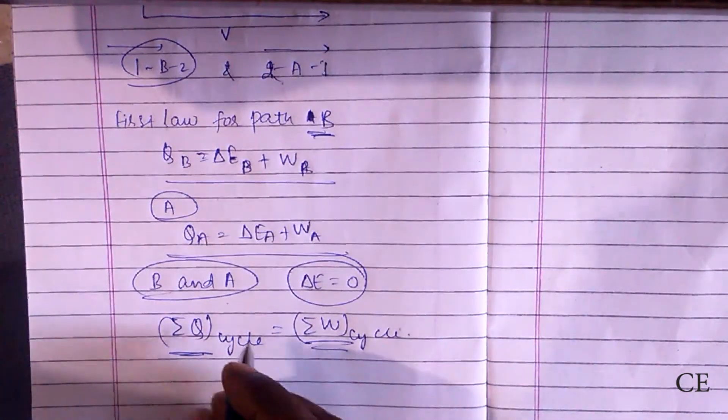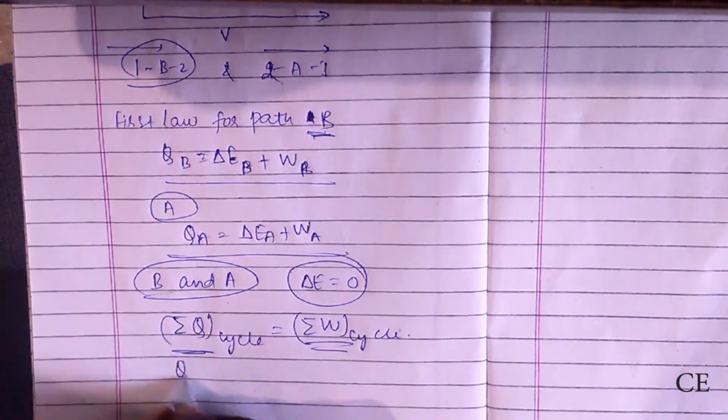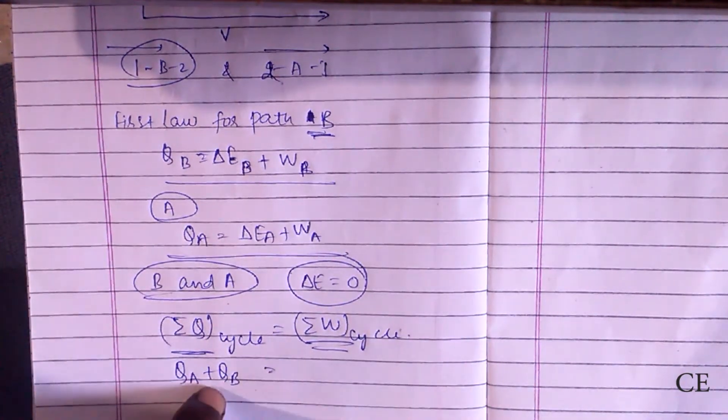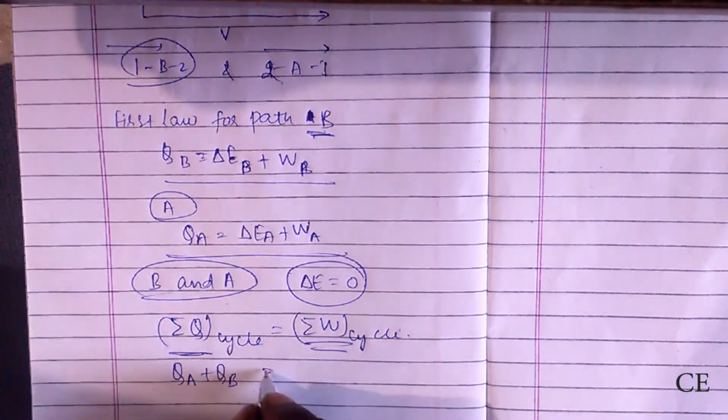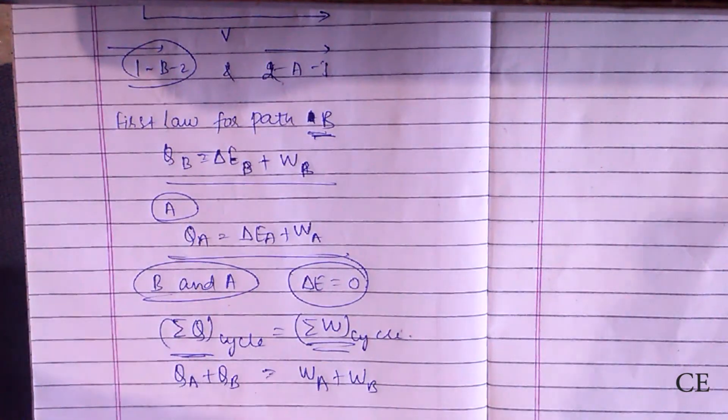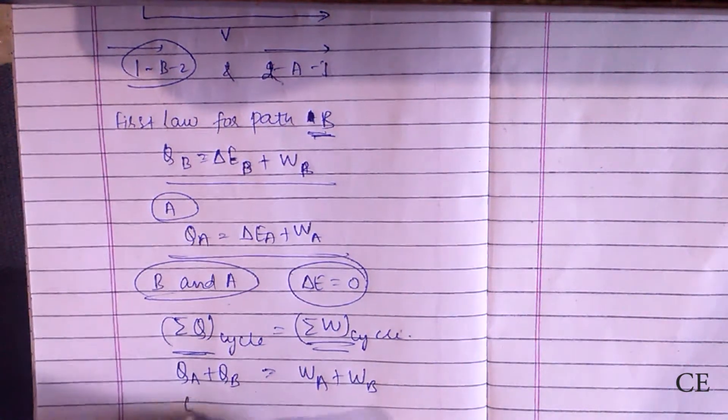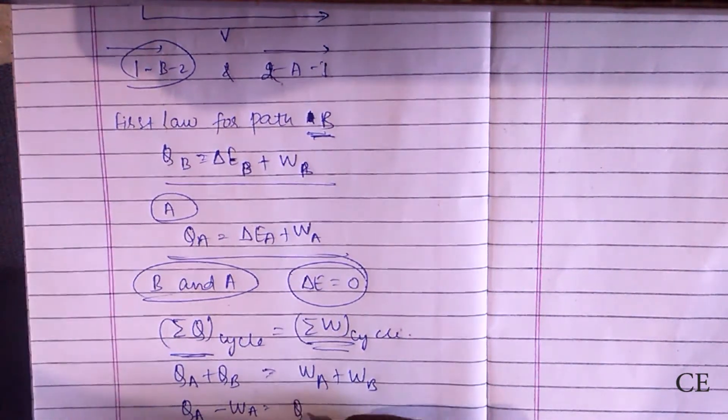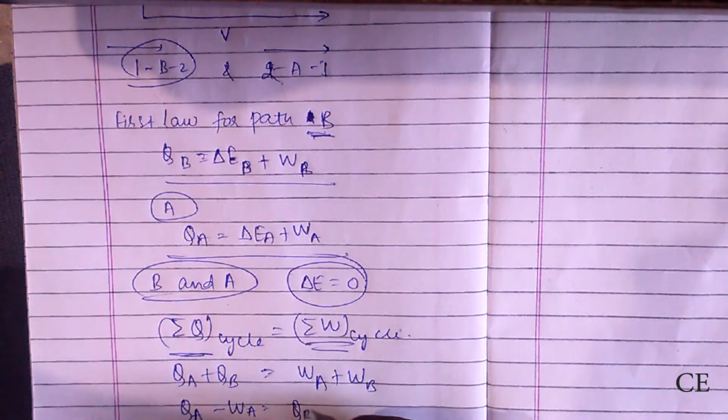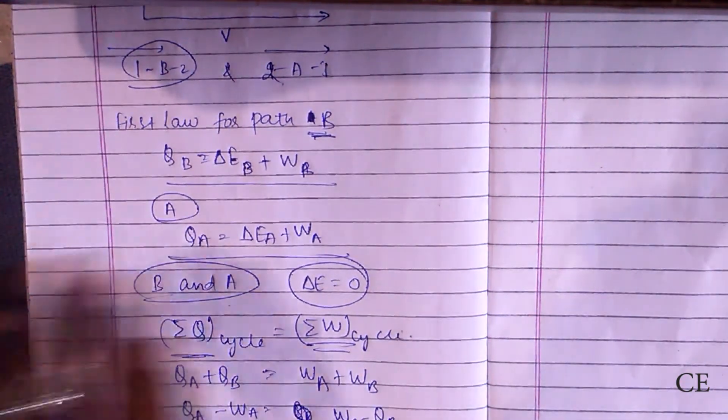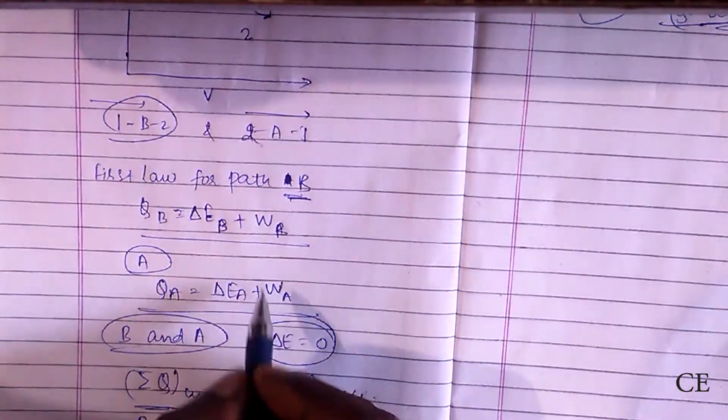Now we could write it as for Q whole cycle, Q_A plus Q_B, this is the path one to two and two to one returning. This would be W_A plus W_B. Now again rearranging it, Q_A minus W_A is equal to W_B minus Q_B. Here we can see that Q_A minus W_A, we can find out that it...